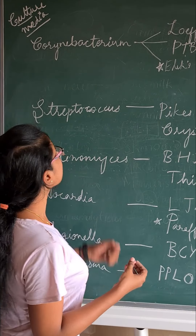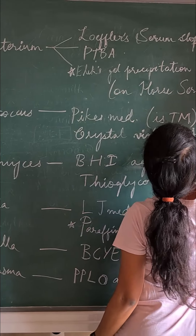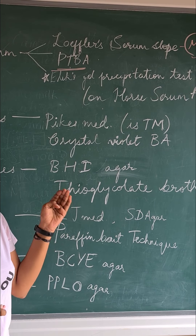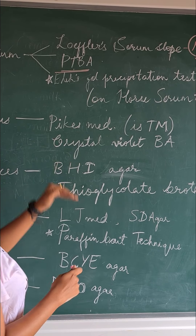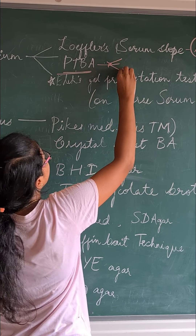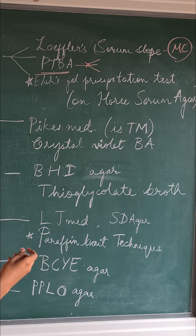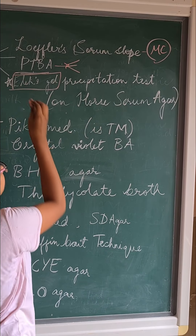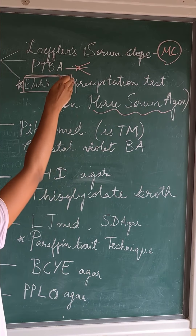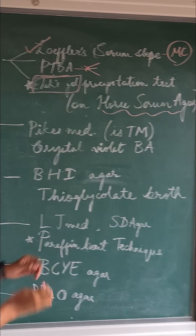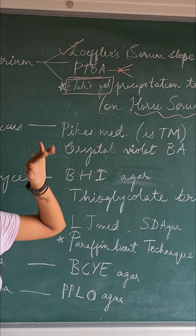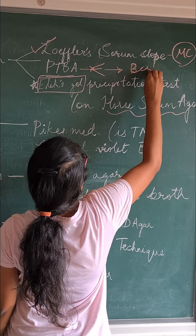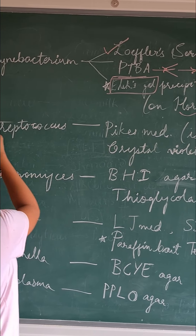For Corynebacterium, it is most commonly cultured on Loeffler's serum slope. It is also cultured on PTBA — potassium tellurite blood agar. Based on PTBA, there is McLeod's classification where Corynebacterium is classified into gravis, intermedius, and mitis. The special test to detect Corynebacterium diphtheriae is Elek's gel precipitation test, which is done on horse serum agar. Common cells are grown on Loeffler's serum slope and inhibited on PTBA agar.